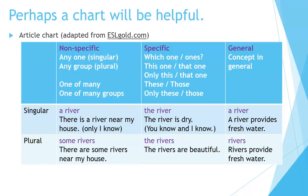Perhaps a chart will be helpful. This article chart is adapted from eslgold.com. Non-specific: any one singular, or any group plural — one of many, or one of many groups. Specific: which one, or which ones? This one or that one — only this one or only that one. In the plural: these or those, or only these or only those. In general, referring to the concept in general.